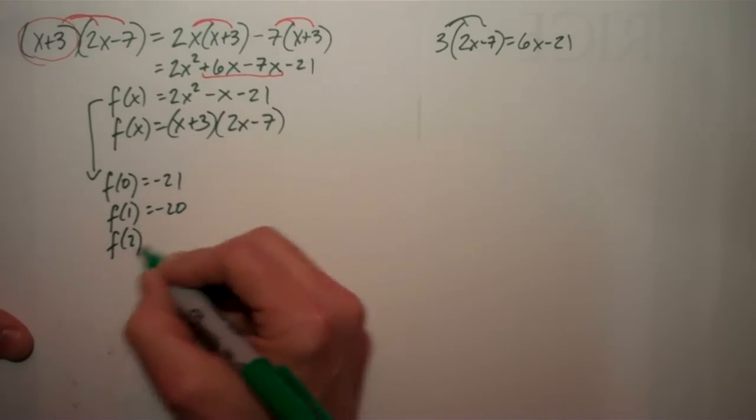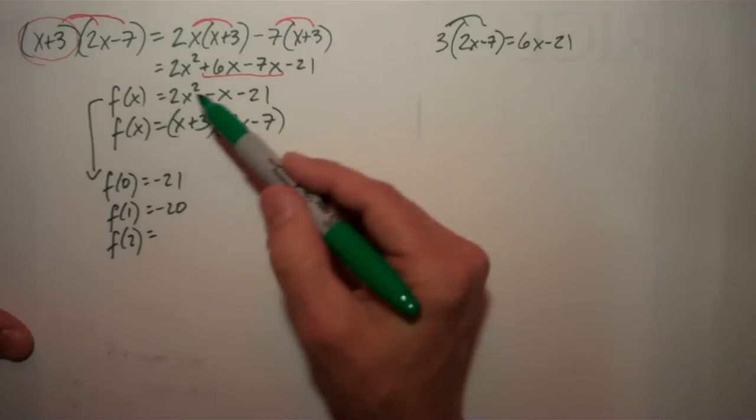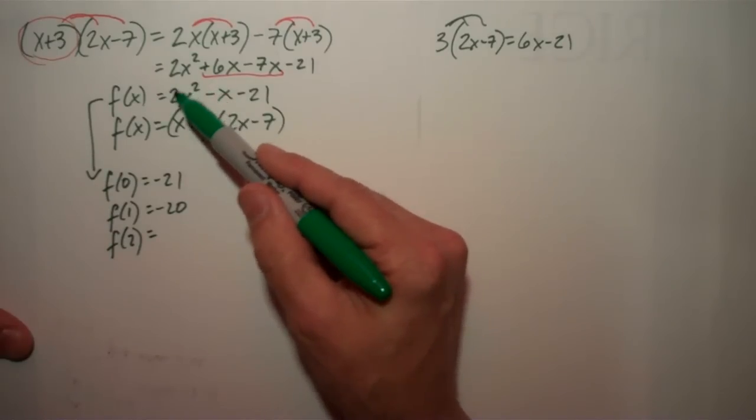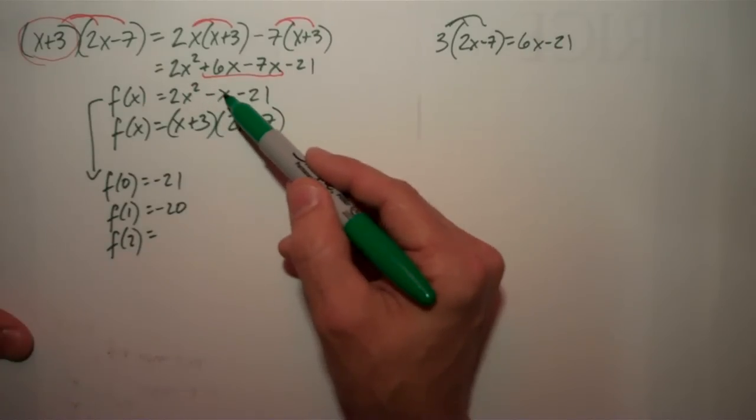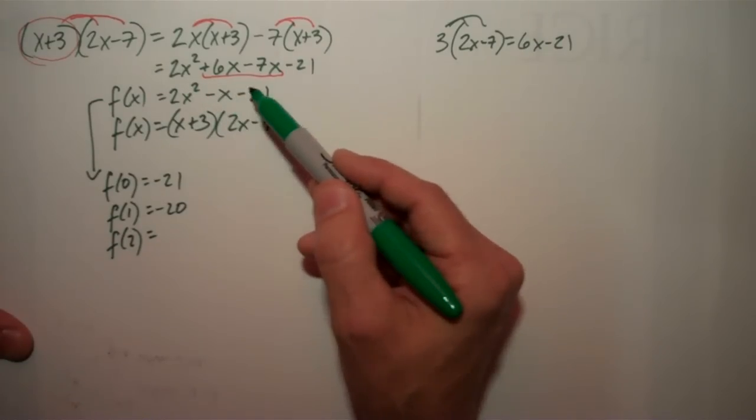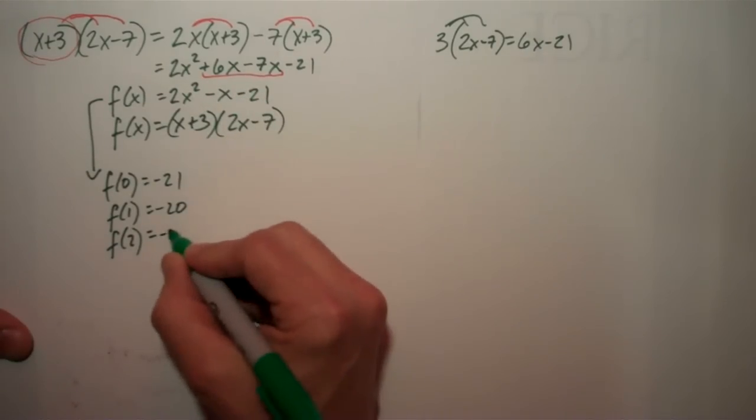Let me try 2. f of 2 is 2 squared is 4 times 2 is 8, 8 minus 2 is 6, minus 21 is negative 15.